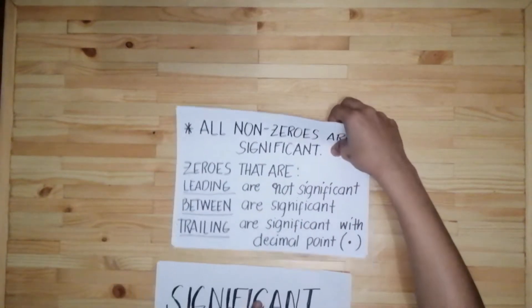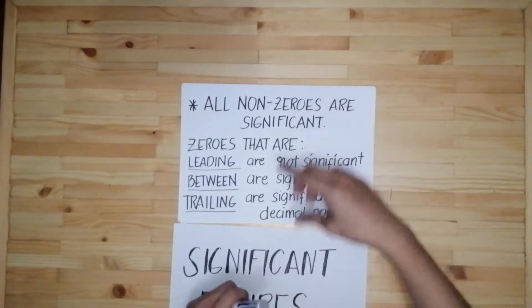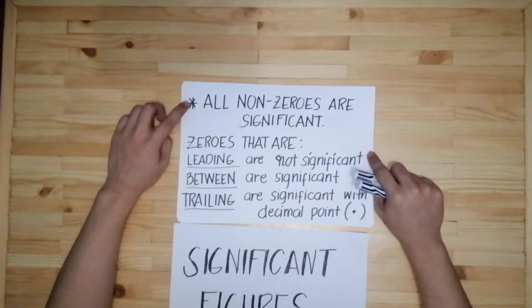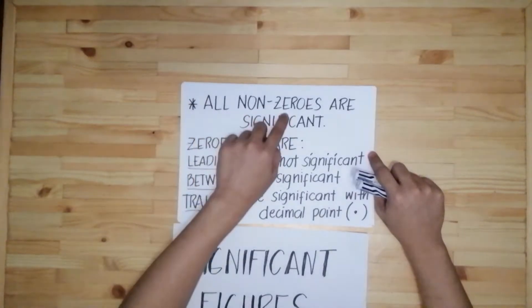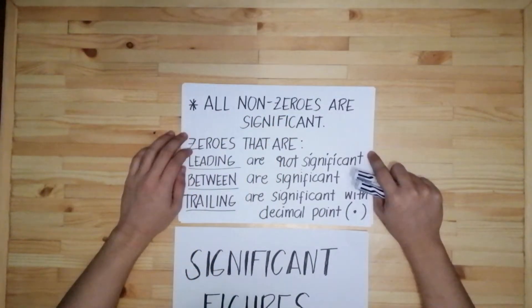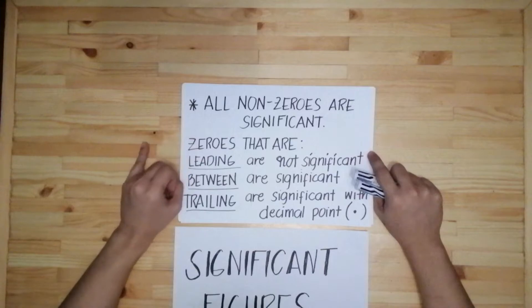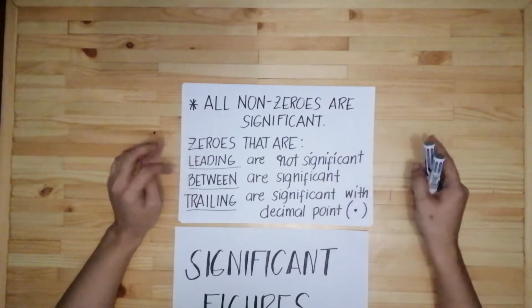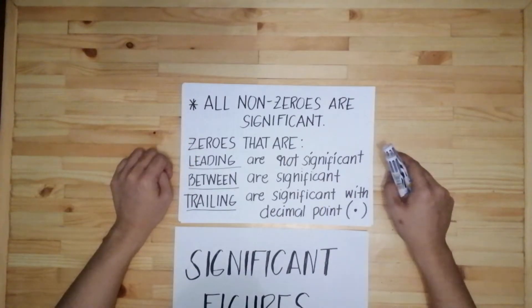We have here the first rule: all non-zeros are significant. When we say non-zeros, these are 1, 2, 3, 4, 5 to positive infinity.